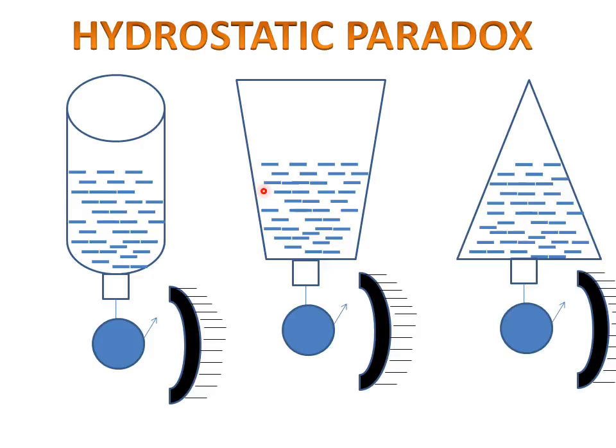Now we can do an experiment for proving it. This is the pointer and scale for the first vessel, this is the pointer and scale for the second vessel, and this is the pointer and scale for the third vessel. Now what will happen when we take the first vessel opening and measure the pressure?